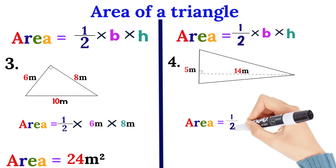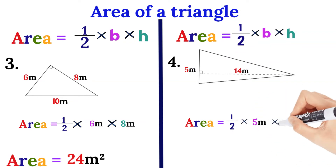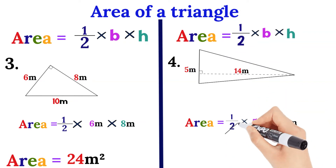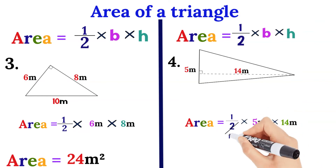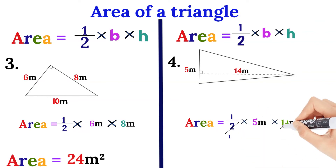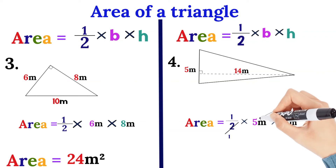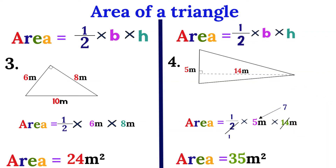Example number four. The base is 5 meters and the height is 14 meters. The area will be equal to half of the height — since the base is 5, it's easier to cancel: two cancels 14 seven times. So you get 7 times 5, which gives us 35 meters squared.